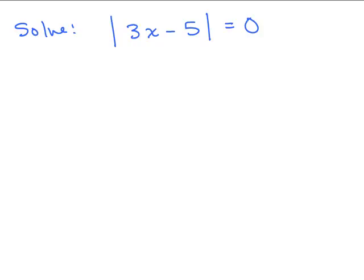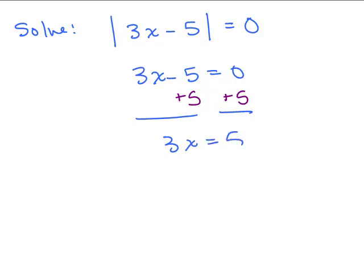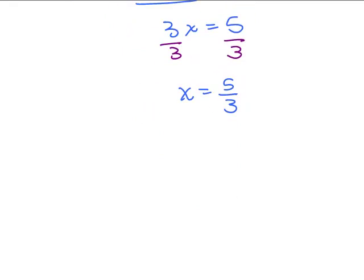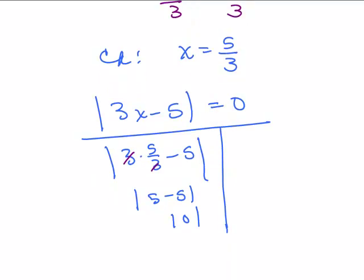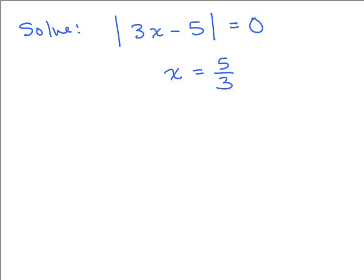One more: solve the absolute value of 3x minus 5 equals 0. Here's the case where the absolute value is isolated and equals 0, so whatever's inside simply equals 0. Solve 3x minus 5 equals 0: add 5 to both sides to get 3x equals 5, then divide both sides by 3 to get x equals 5 thirds. Checking in the original: absolute value of 3 times 5 thirds minus 5 — the 3's cancel, leaving absolute value of 5 minus 5, which is absolute value of 0, equals 0. It checks out.